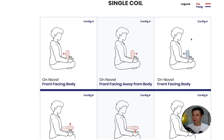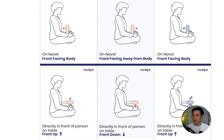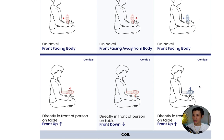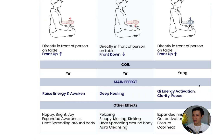The reason we only show two configurations for the yang coil — facing the body and facing up — is because the other orientations don't feel as good. The main effect you'll receive is qi energy activation, clarity, and focus. You'll also experience expanded mind awareness, get activation, improved posture, and a cooling heat sensation.